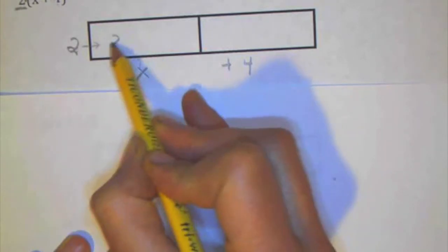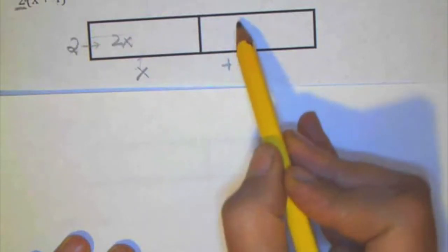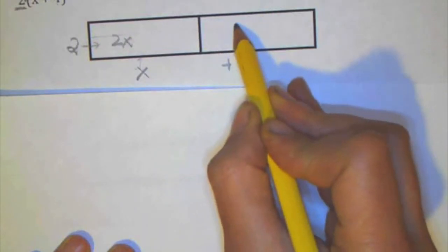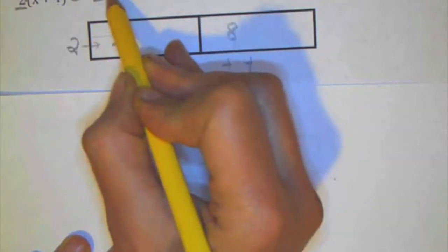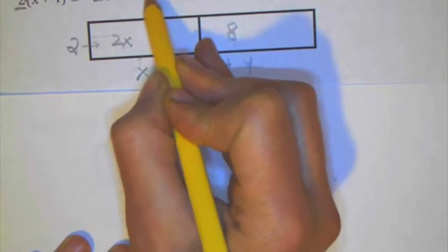And then what I do is I multiply the 2 times the x. So this is 2 times x, that's 2x. And then this box is the 2 times the 4 or positive 4, so 8. And then I add all my terms up together. So I get 2x plus 8.